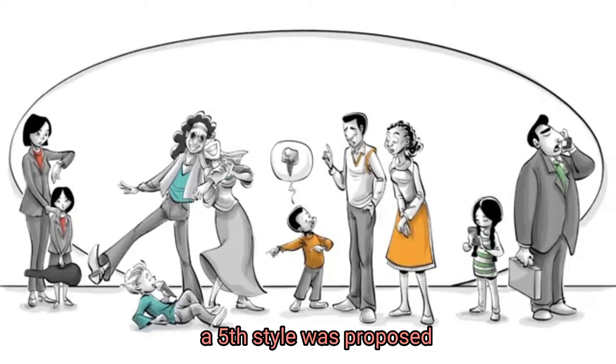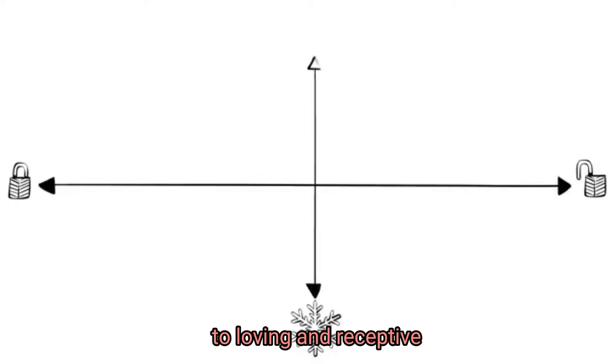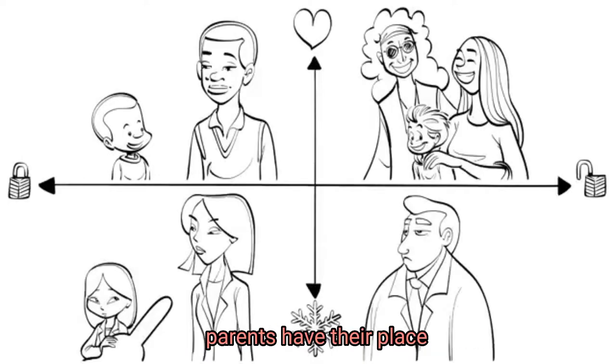Recently, a fifth style was proposed, but we will come back to that later. The styles range from controlling and demanding to complete freedom, and from cold and unresponsive to loving and receptive. Each authoritative, permissive, authoritarian and neglectful parents have their place.